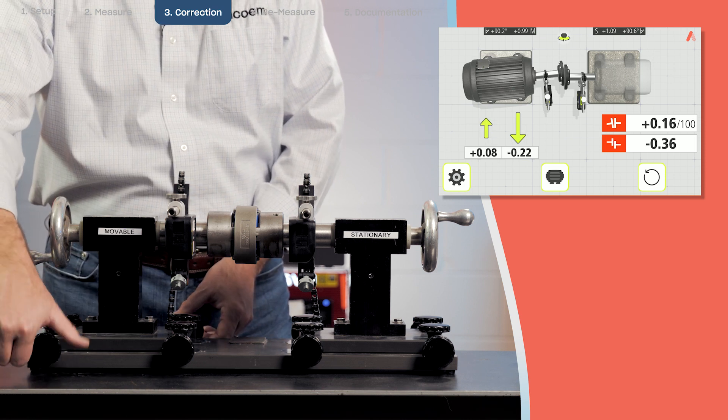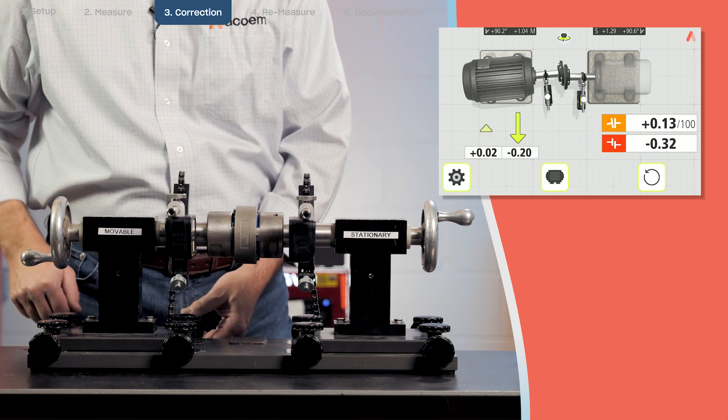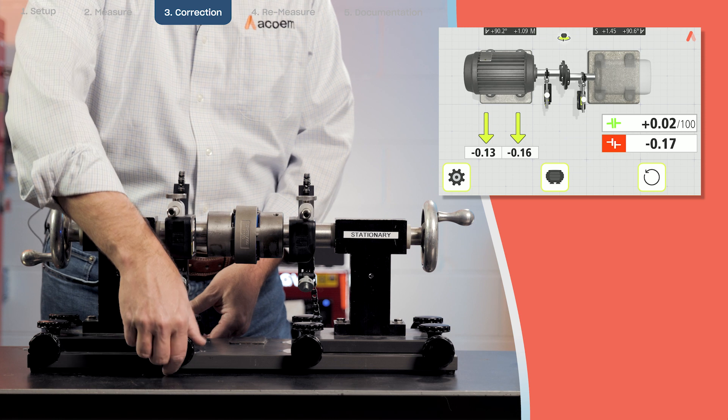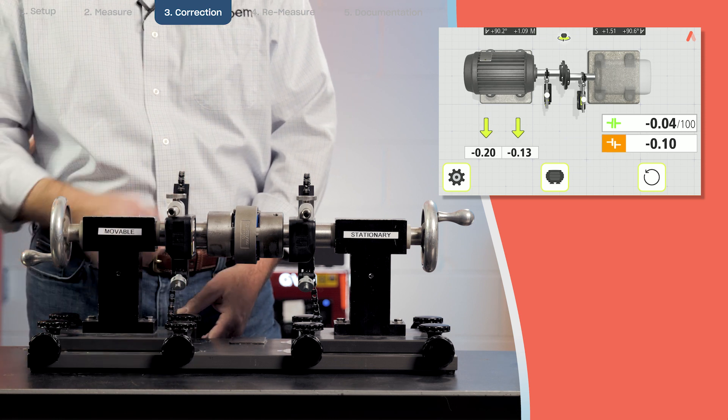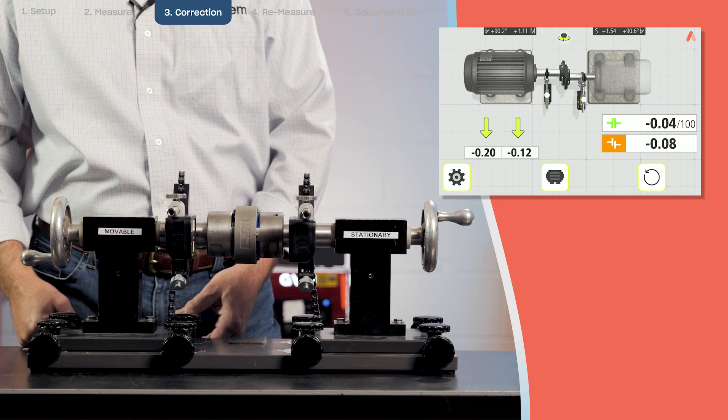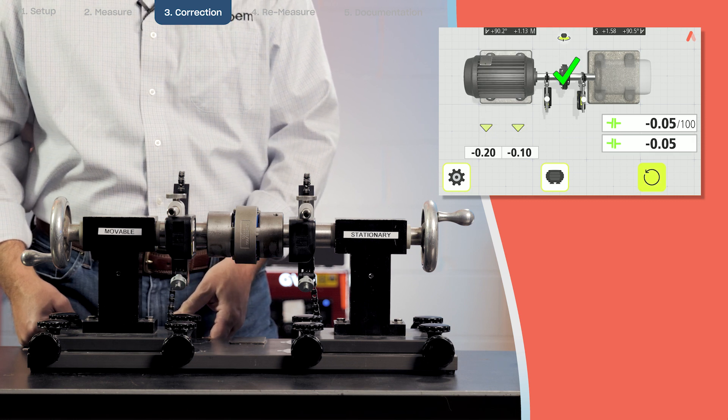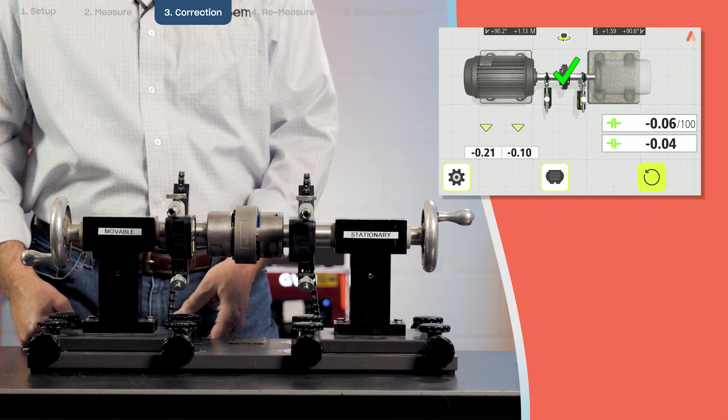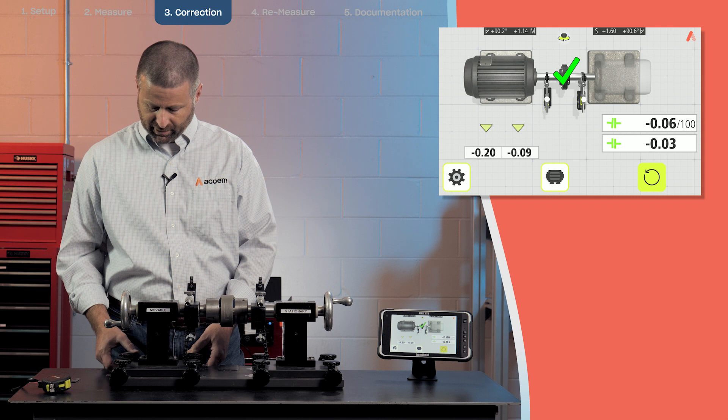Went a little bit too far. You can see now that the color code is starting to change from red to orange and green. We want to get both the angle and the offset in the green. You can see we're now within tolerance.